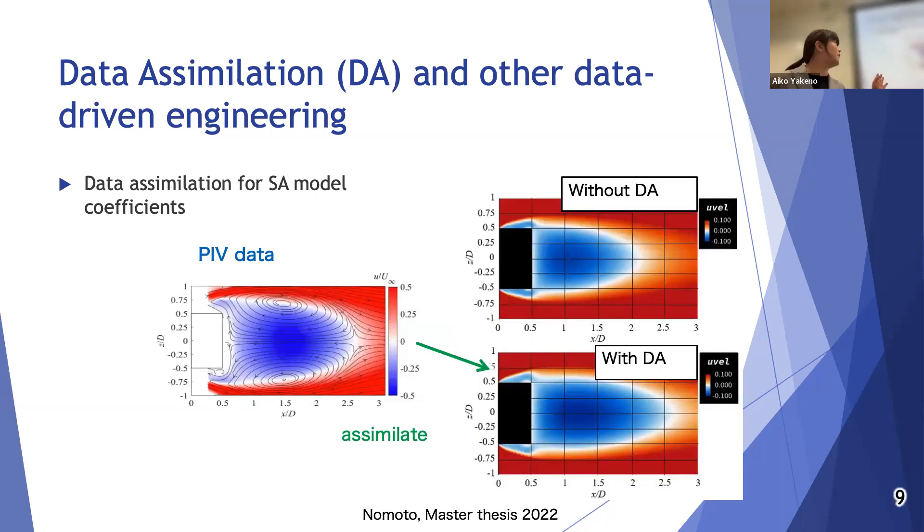Then finally we can use data assimilation for RANS model coefficient tuning. We have PIV data downstream of a cylinder model that is floated in MSBS settled in the wind tunnel. We apply data assimilation to obtain the optimal RANS model parameters to reproduce the PIV without the model.